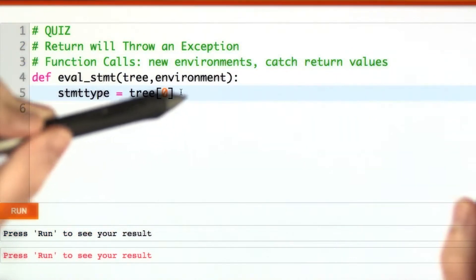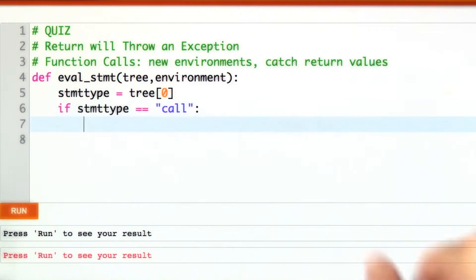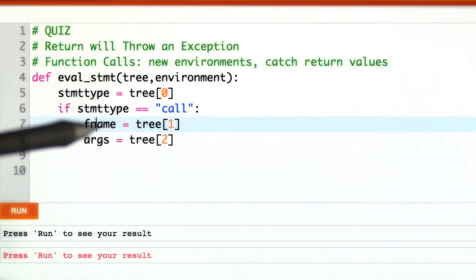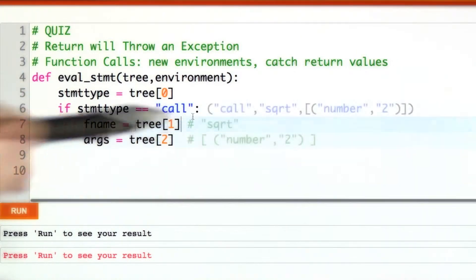Once again, we extract this statement type from our abstract syntax tree, and now we want to handle function calls. There are two parts to a function call abstract syntax tree, the name of the function, like absolute value or my fun or square root, and then the arguments.